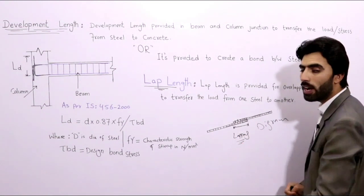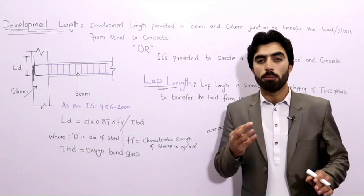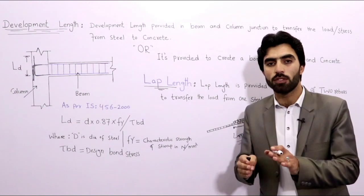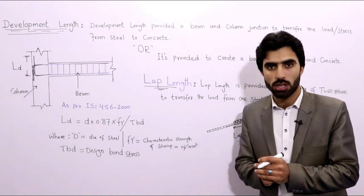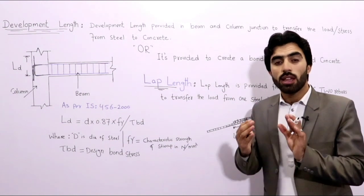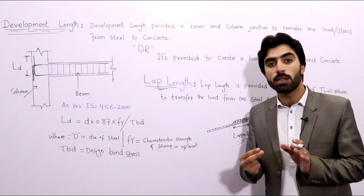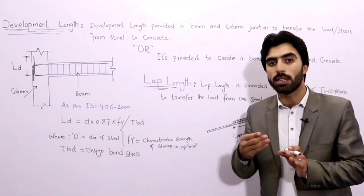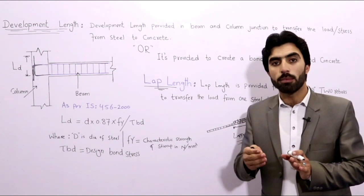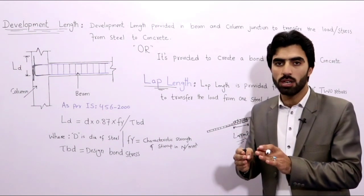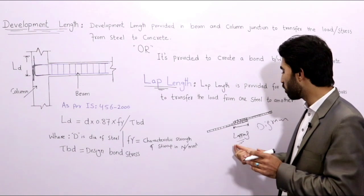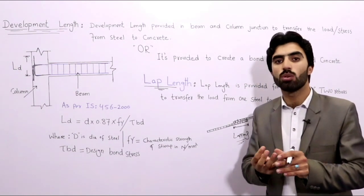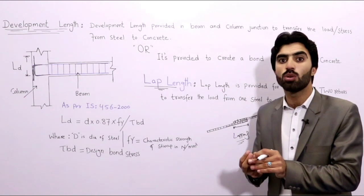How do we find lapping length for beam, column, and slab? Remember, lapping length should be provided at the mid-span of the structure. Lapping length should not be provided at the ends or at the supports — it should be provided at the mid because the bending moment is zero at the mid of the structure. This applies to beam, column, and slab.